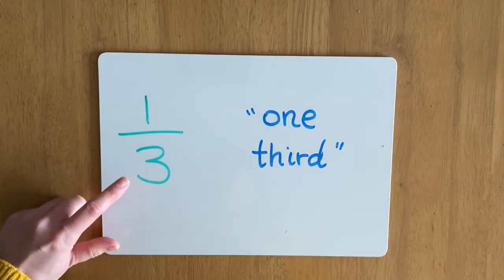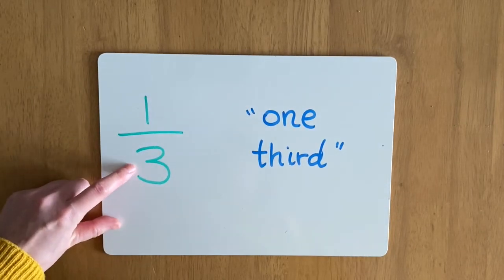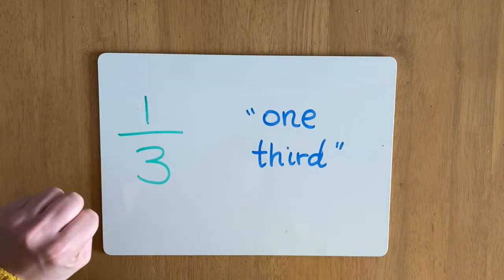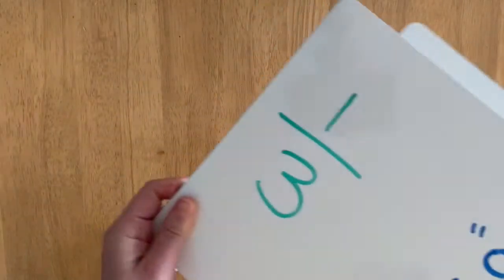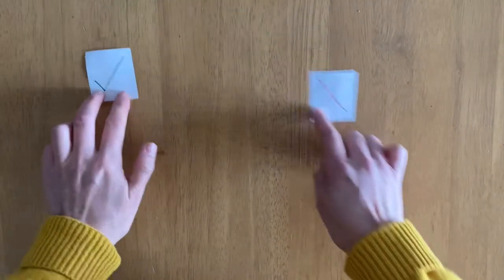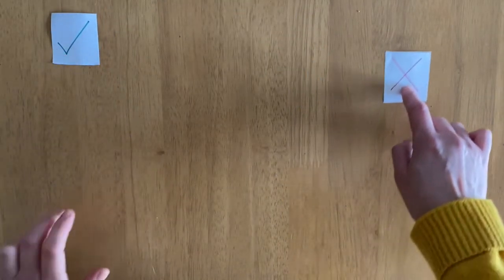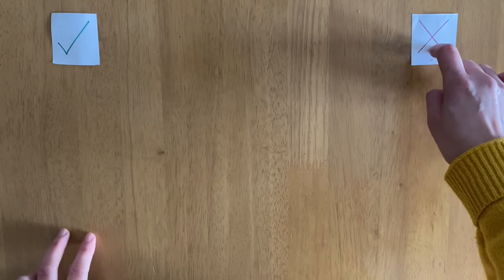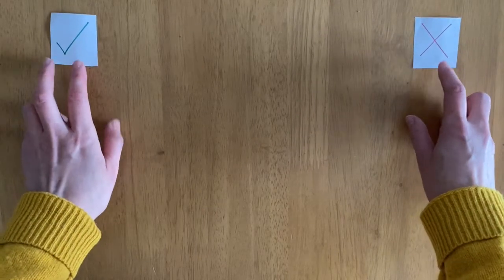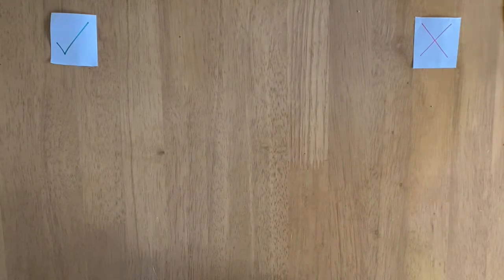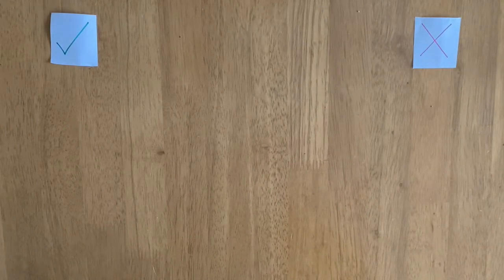We split it into three equal parts, and we hold one of those parts. Just like we've done for the recognizing one-quarter lesson, we are going to be looking at different shapes and thinking about whether or not that shape shows one-third. We have to think about what does one-third mean.